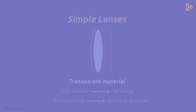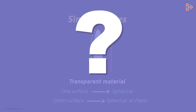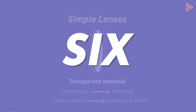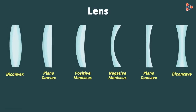With this knowledge, how many types of lenses do you think exist? There are six types of simple lenses. This is what they look like — note that they are drawn in a two-dimensional space, but you can imagine their appearance in three dimensions.